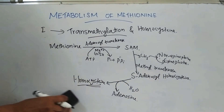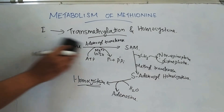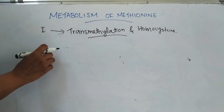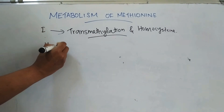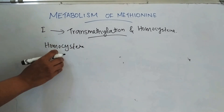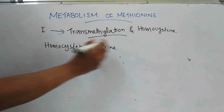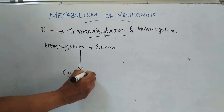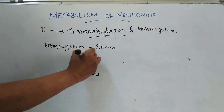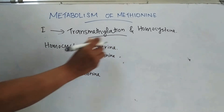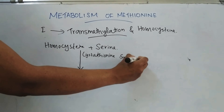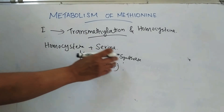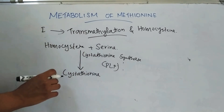The second stage is conversion of homocysteine to homoserine. Here, homocysteine condenses with serine and forms cystathionine, by the enzyme cystathionine synthase. This reaction requires PLP. So cystathionine is formed by the condensation of homocysteine and serine.